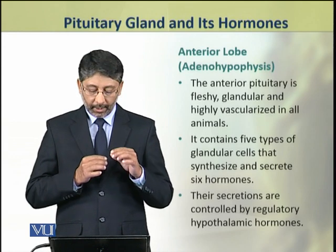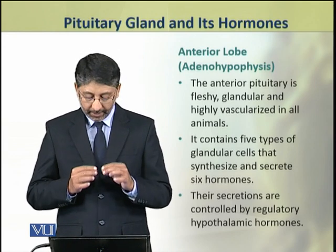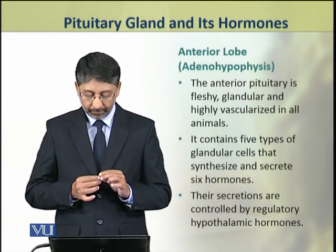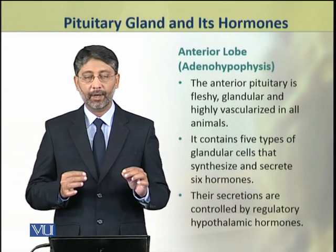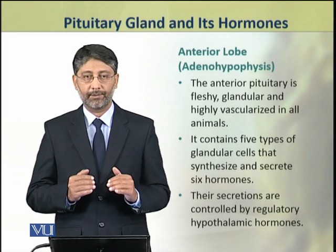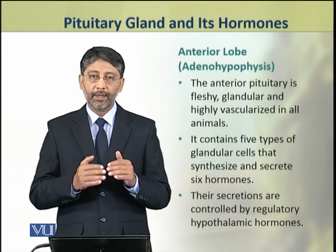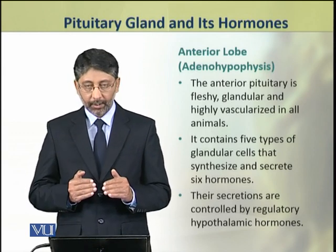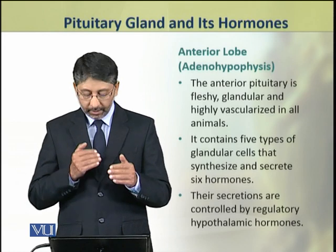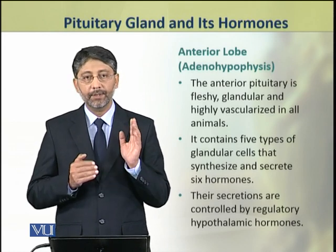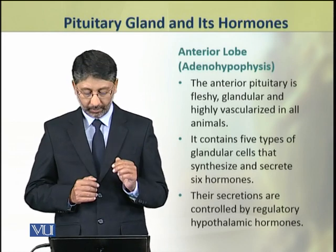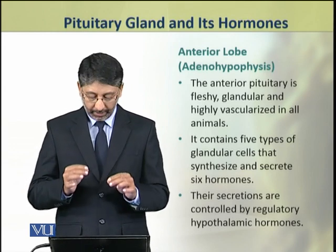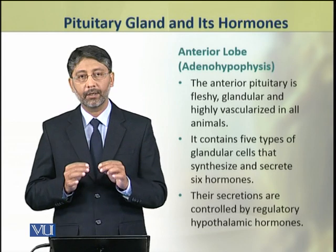We shall discuss the roles of all three lobes. The anterior lobe or adenohypophysis is fleshy, glandular, and highly vascularized in all animals. It contains five types of cells which are glandular and synthesize and secrete six hormones. Their secretions are controlled by the hypothalamic hormones.